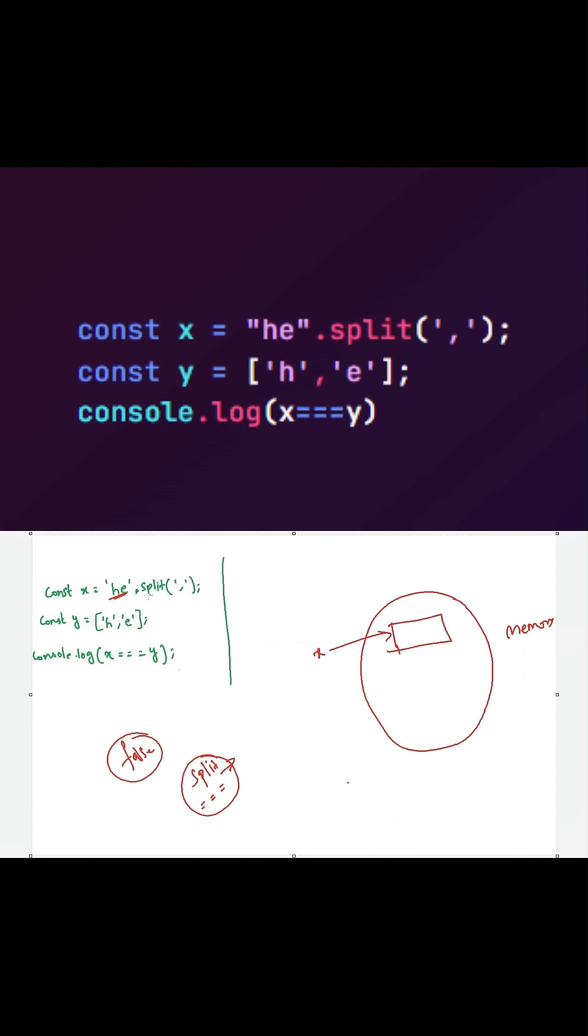String 'he' will be split by this comma separator operator, so here it will create an array with two characters: h comma e.